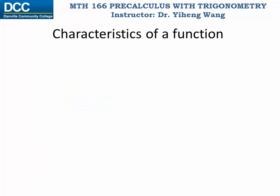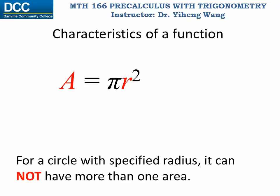Hopefully at this point you have already had some understanding of functions. If you think deeply, you will realize that for any specified independent variable value, it cannot have more than one corresponding dependent variable value. For example, for this function that relates the radius of the circle to its area, for a given radius, the circle cannot have two different areas — its area is determined exactly by this equation.